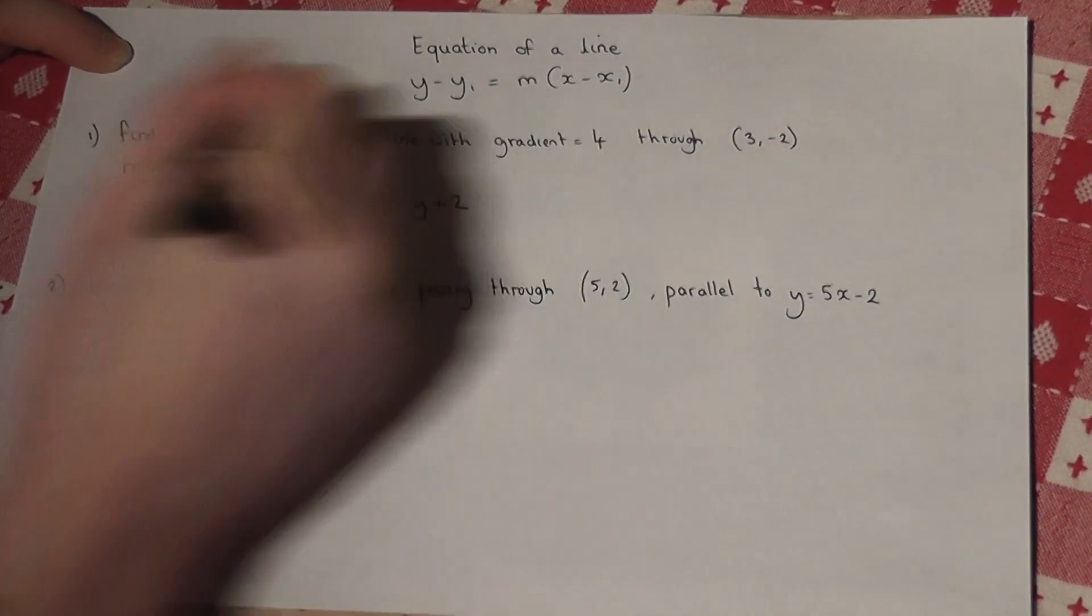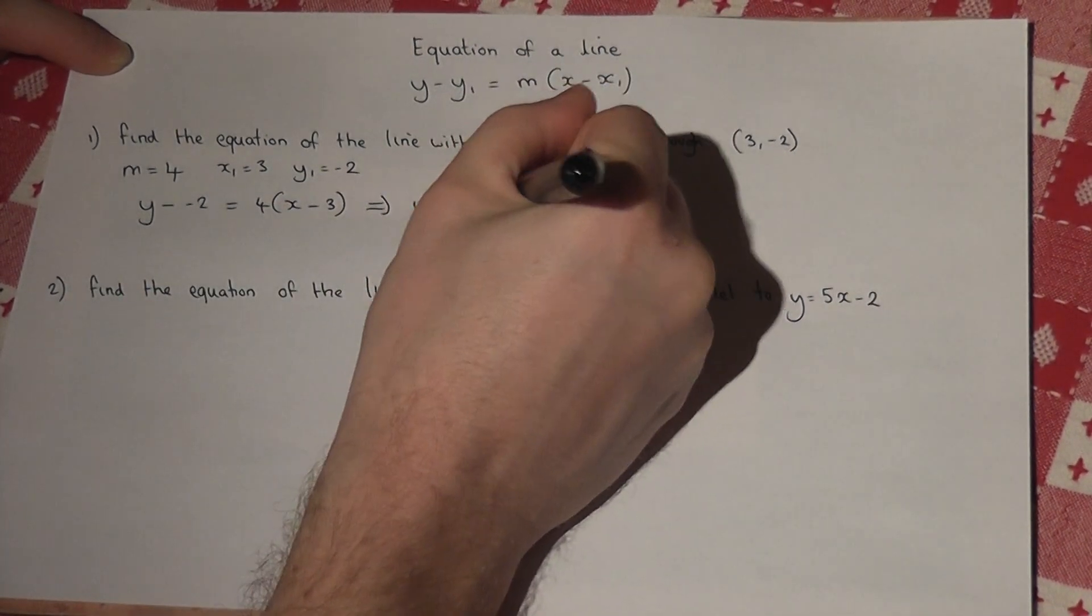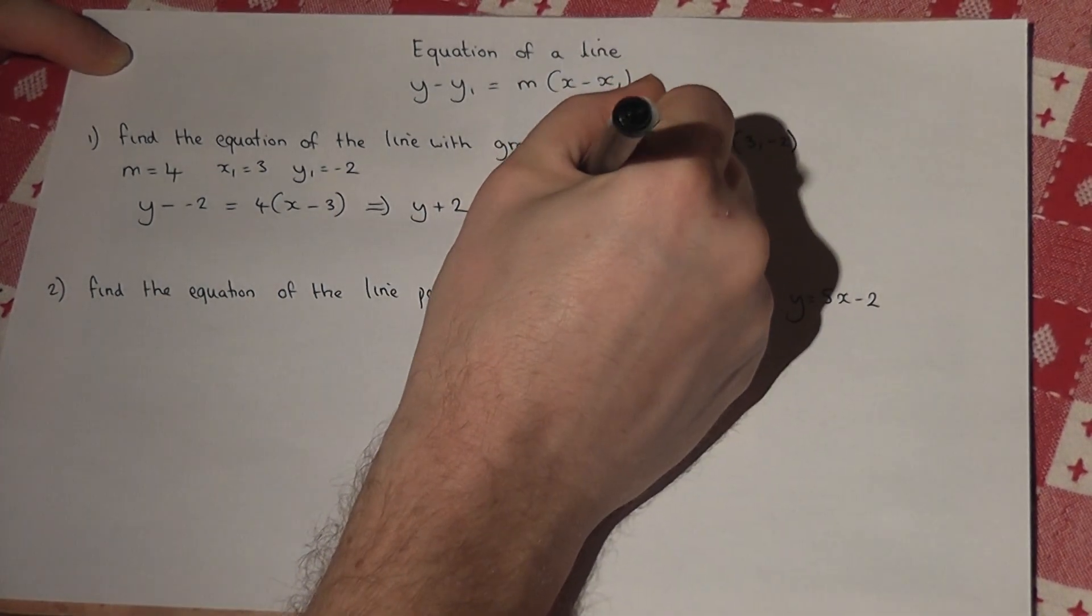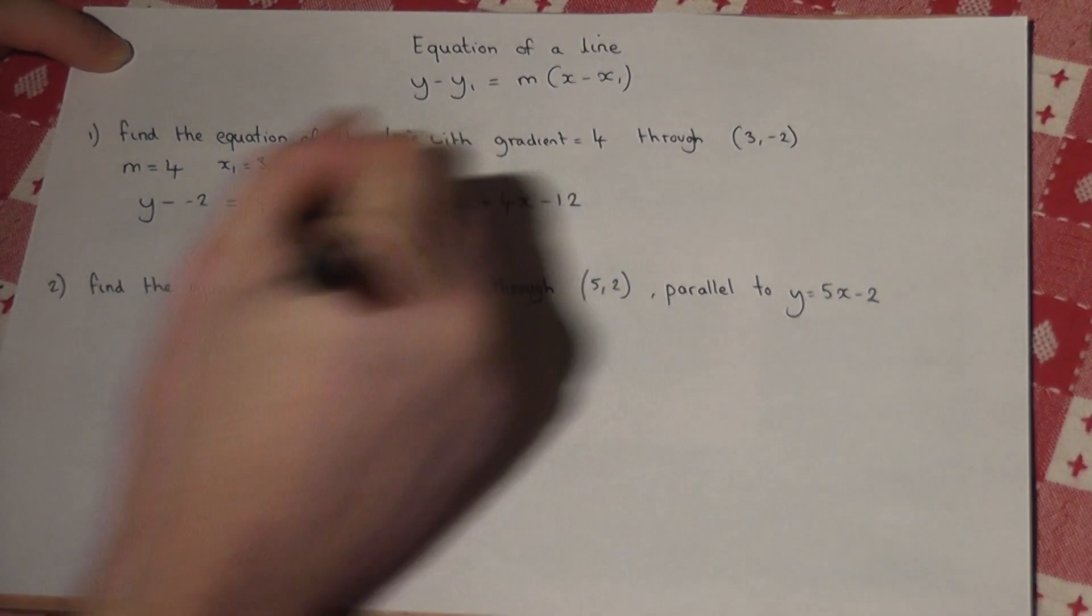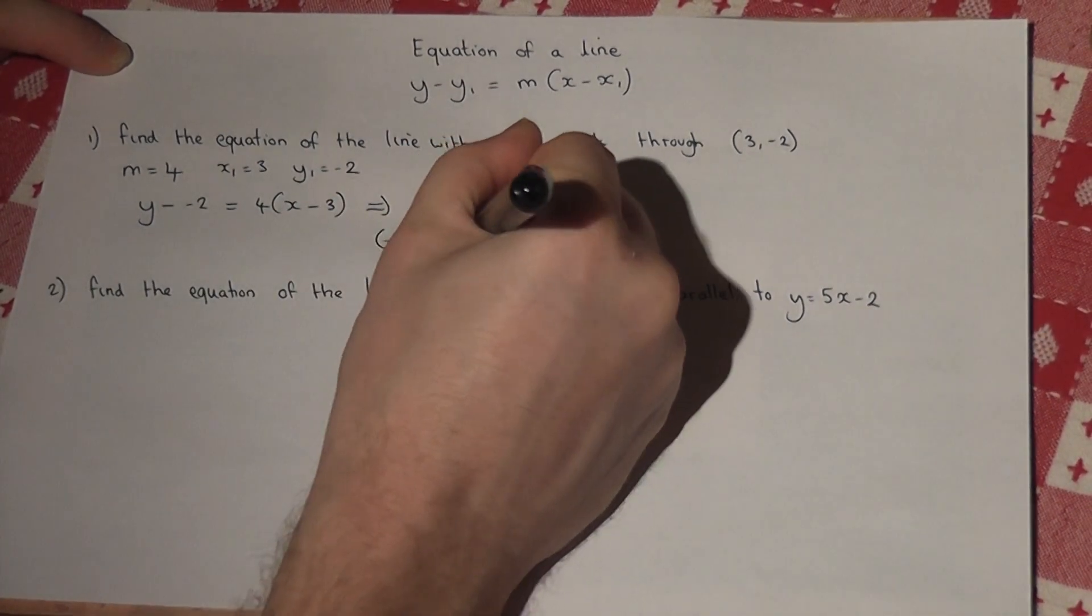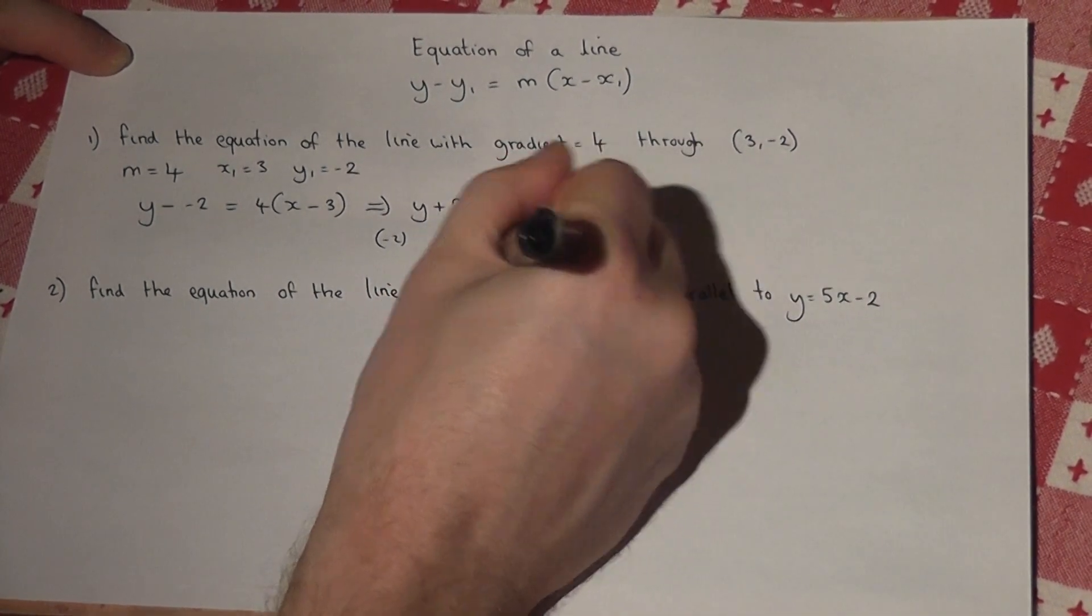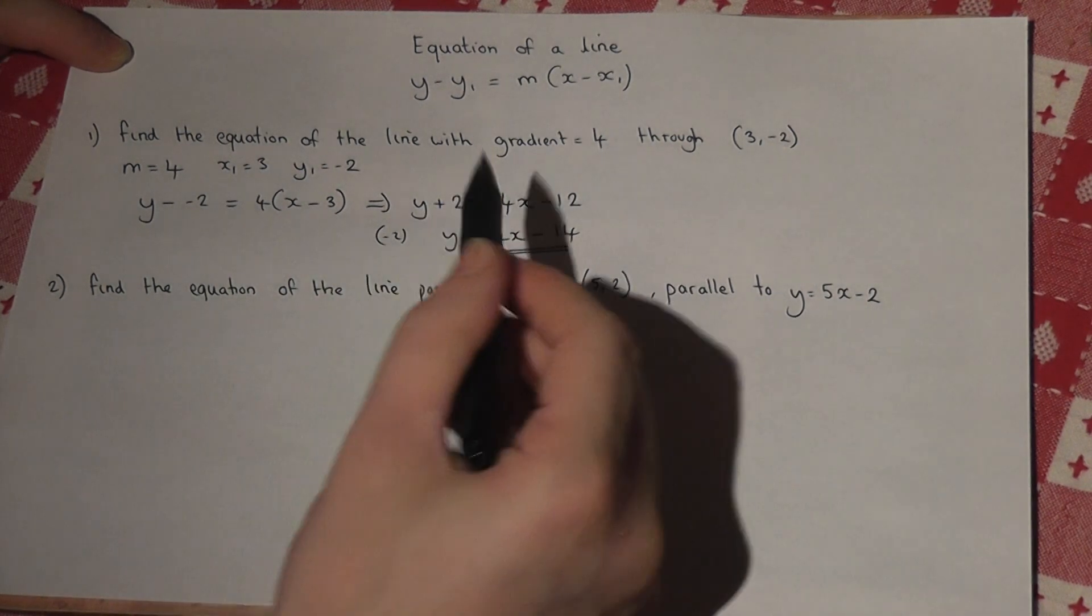Rearranging by taking 2 from both sides gives y equals 4x minus 14. A reminder: when it's in this explicit form for y, the gradient is 4 and the y-intercept is -14.